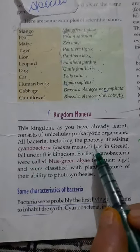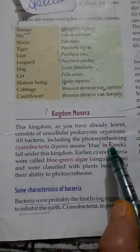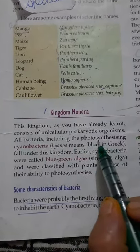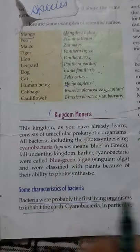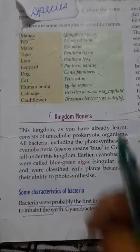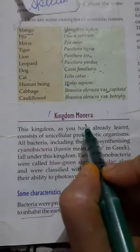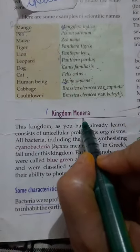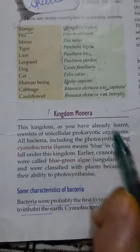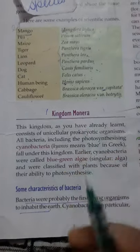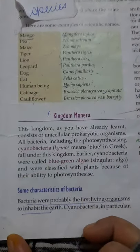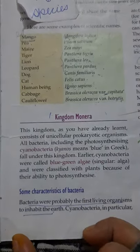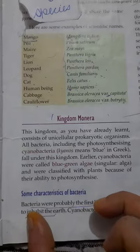Cyanobacteria are also known as blue-green algae because they prepare their own food. Kingdom Monera includes prokaryotic, unicellular organisms. In this chapter we will study about the bacteria in Kingdom Monera.